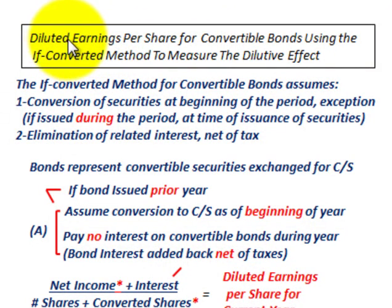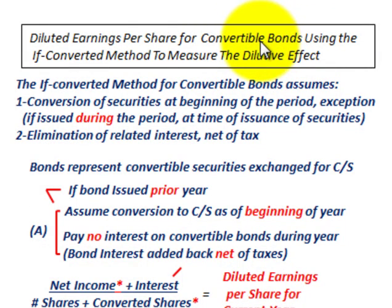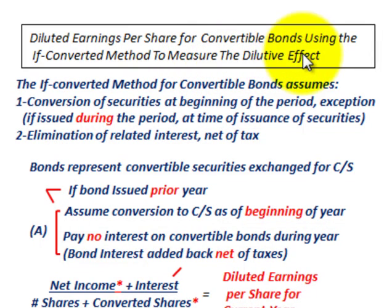What we're going to be going over here is diluted earnings per share for convertible bonds, which represent convertible securities. We're going to be using the if-converted method to measure the dilutive effect that the convertible bonds have.